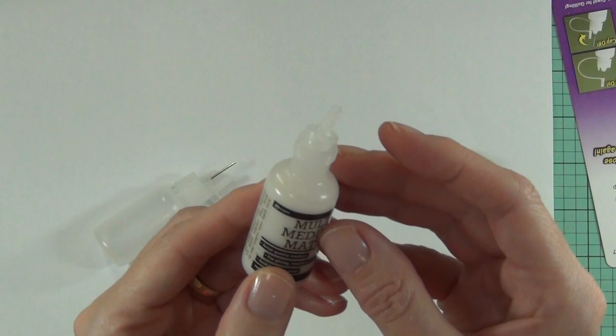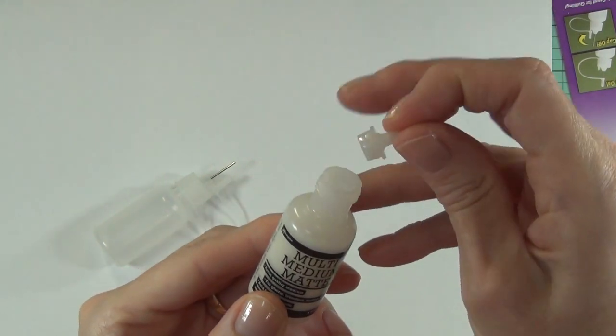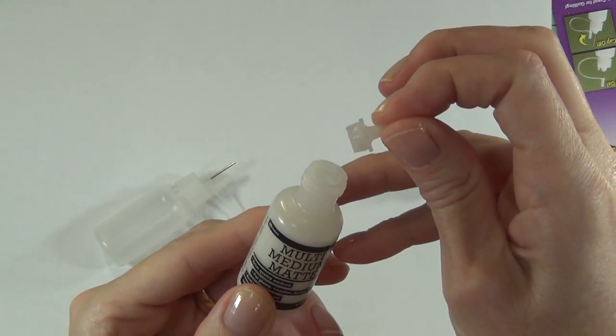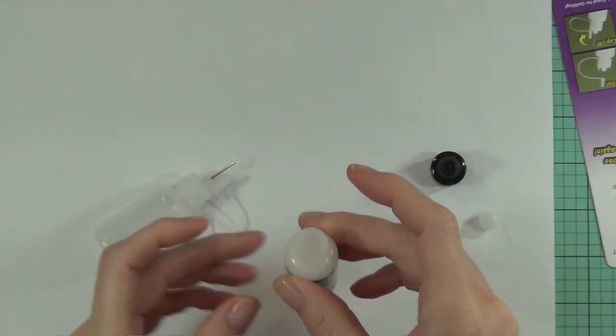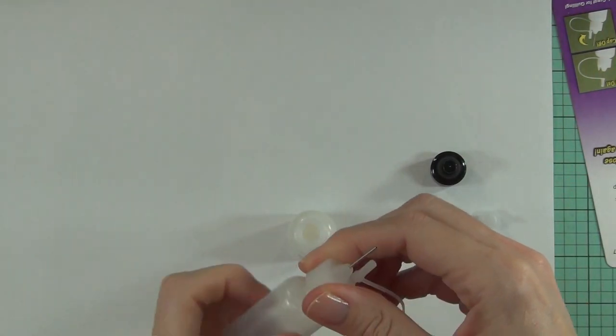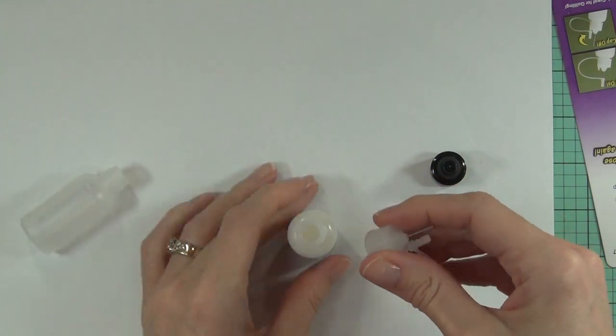And then I only use the very top of the Quilled Creations bottle. You could fill the bottle with the medium if you wanted, but it's much easier to do it this way.